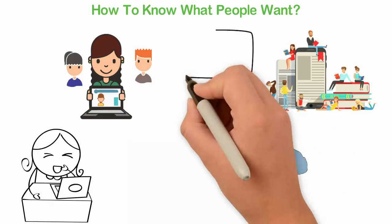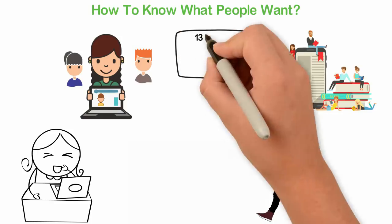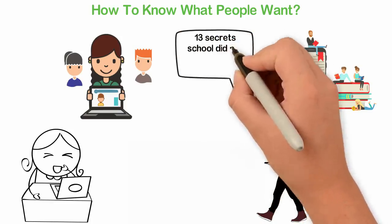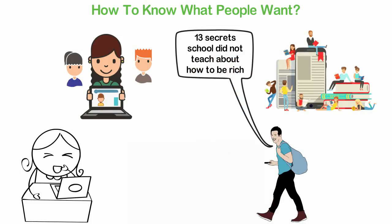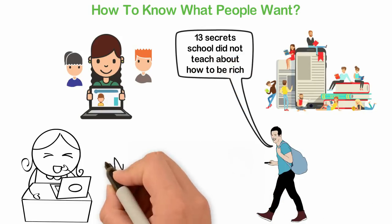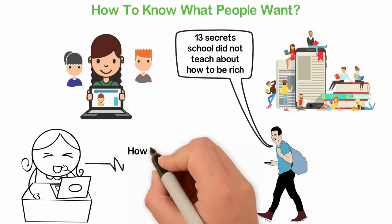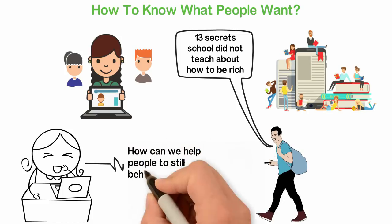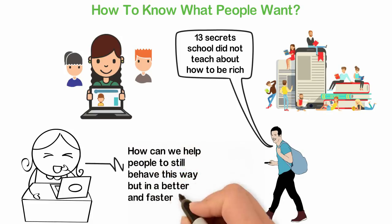So how do you know what people want? Study what they are doing and buying now and find a way to create a superior version of that. Study human behavior in the real world and ask yourself, how can we help people to still behave this way but in a better and faster version?